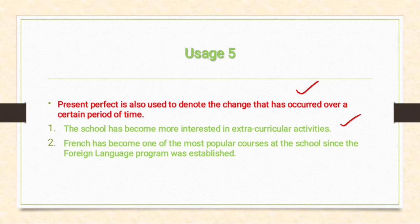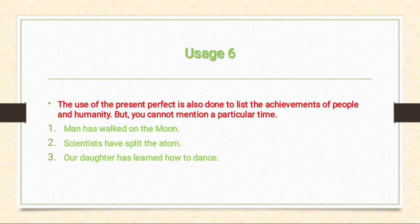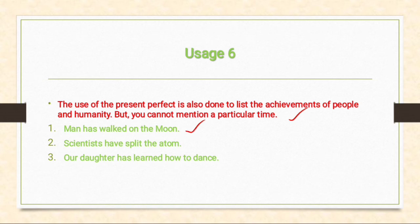Sixth usage: present perfect tense is also used to list the achievements of people and humanity, but you cannot mention a particular time. For example: 'Man has walked on the moon' — we don't know that particular time. 'Scientists have split the atom.' 'Our daughter has learned how to dance.'